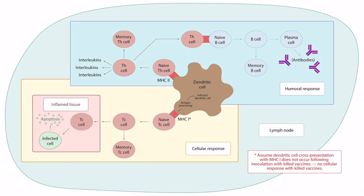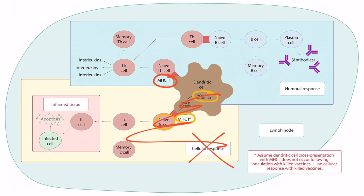The pathogen must be living to infect the dendritic cell so it can present proteins on MHC class 1 and activate the cytotoxic T cell. But even though a killed vaccine can't induce a cellular response, the dendritic cell can still phagocytose the pathogen and present it on MHC class 2, activating naive T helper cells and forming memory T helper cells and memory B cells — just not memory cytotoxic T cells.